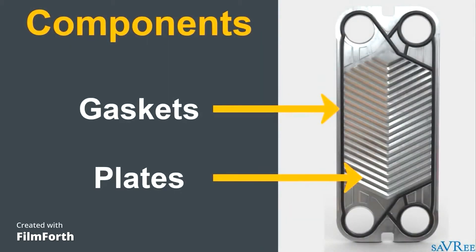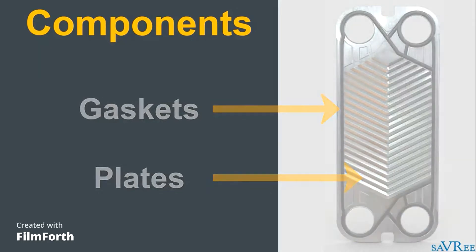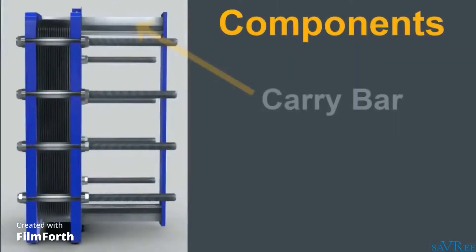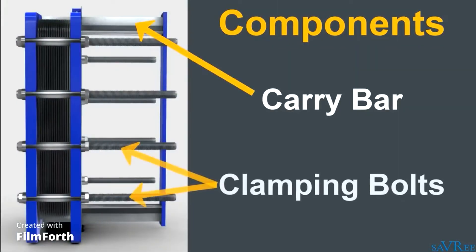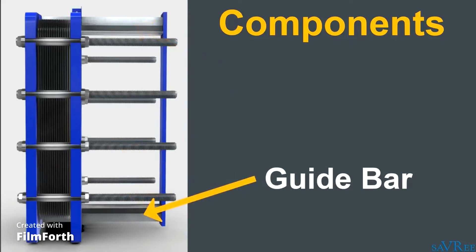Gaskets and plates are used to separate the flowing mediums and prevent them from mixing. The gaskets are adhered to one side of each plate only. The plates hang upon a carry bar and are pressed together using clamping bolts. When the plates are compressed together, they form a plate stack. A guide bar ensures the plates are aligned correctly when the plate stack is opened and closed.